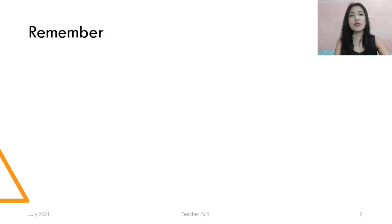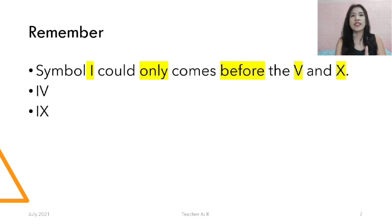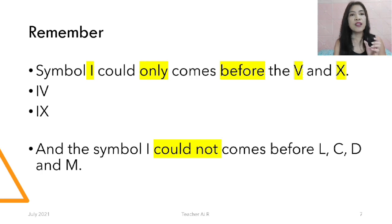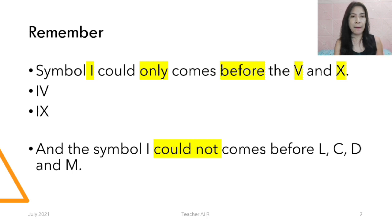We also have to remember: the symbol I can only come before V and X — that is IV (which is 4) and IX (which is 9). The symbol I cannot come before L, C, D, or M. There is no such numeral as IL, IC, ID, or IM.